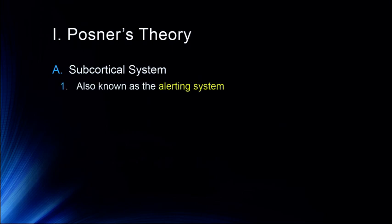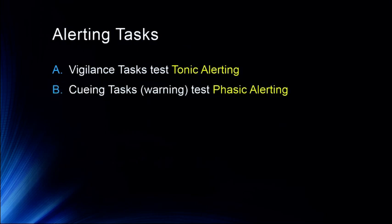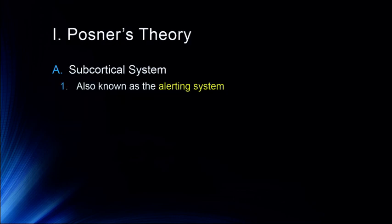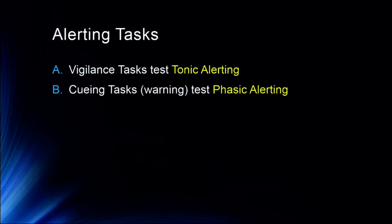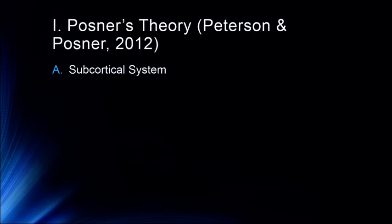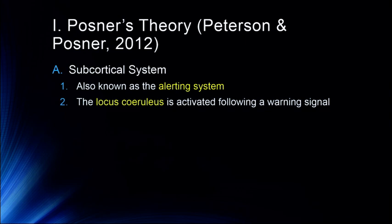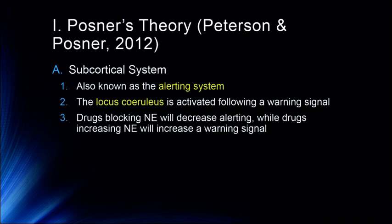The subcortical system is also known as the alerting system. Tasks used to test it include vigilance tasks, which test tonic alerting — our basic level of alertness — and cueing tasks involving some sort of warning, which test phasic alerting. The locus coeruleus is activated following a warning signal as part of that alerting system. Drugs that block norepinephrine will decrease alerting, while drugs that increase norepinephrine will increase the warning signal.